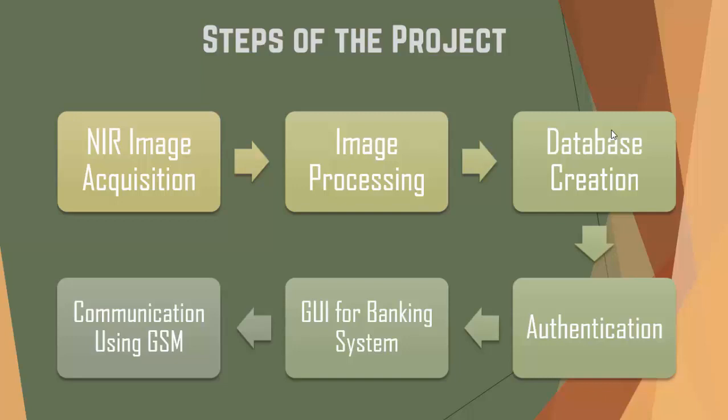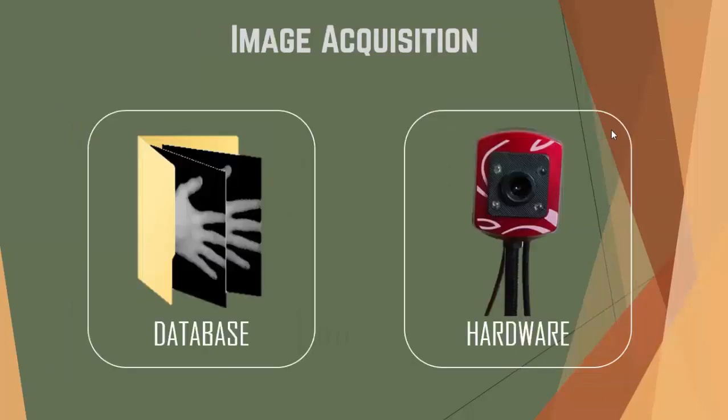We have collected a database containing near-infrared images of the dorsal hand of 111 subjects from Techno Campus with the help of our respected teacher Tarikul Islam sir. In addition, we are working with our own hardware setup for collection of NIR images. This includes removing the IR filter of a webcam, which blocks wavelengths in the range of 720 nanometers, and adjusting the focus of the camera.